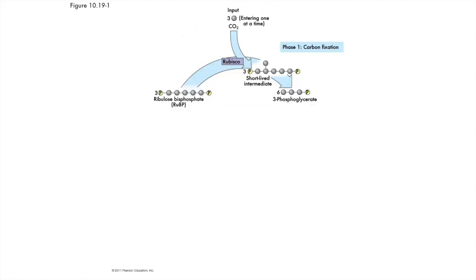Rubisco catalyzes the first step in the Calvin cycle: carbon fixation. In this diagram, three molecules of ribulose bisphosphate, or RUBP, are accounted for, representing three turns of the Calvin cycle — what we need for one sugar molecule to be outputted. For each molecule of RUBP, one molecule of carbon dioxide is added by Rubisco. This produces a very unstable six-carbon molecule that immediately breaks down into three-carbon molecules called 3-phosphoglycerate. The carbon dioxide is now in an organic molecule, though not a particularly useful one.